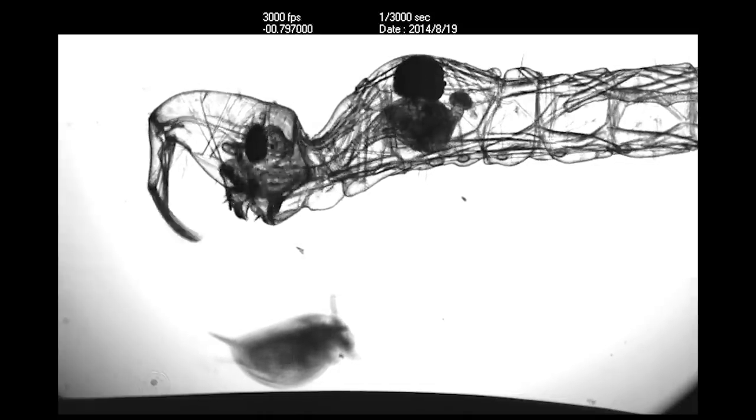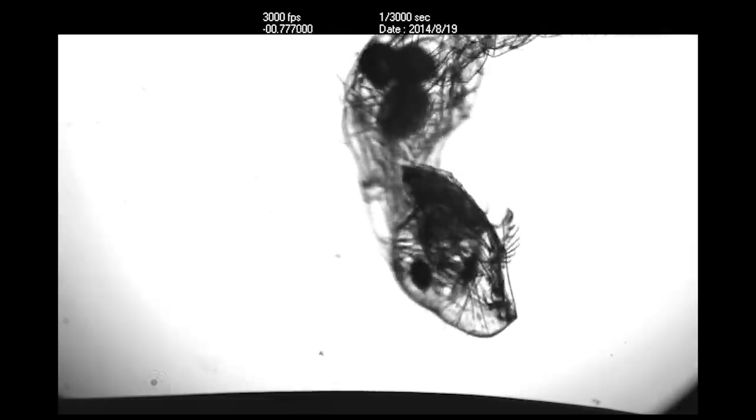For comparison, the mantis shrimp takes just four to eight milliseconds. The record holders, trap jaw ants and trap jaw spiders, attack in less than one millisecond.